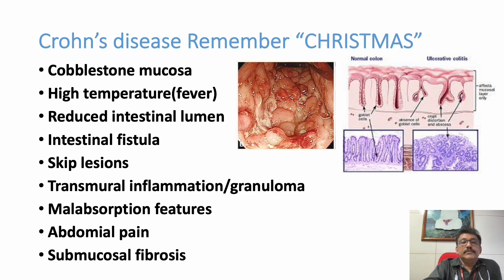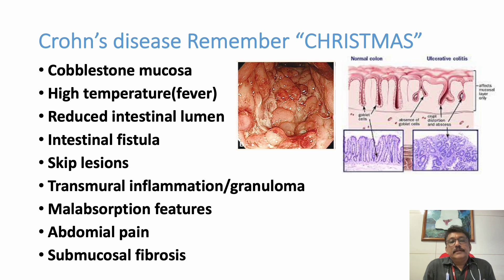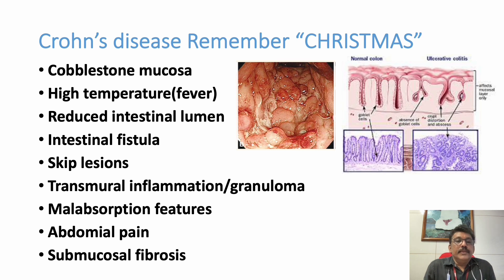In Crohn's disease, we can remember the features using the mnemonic CHRISTMAS: Cobblestone mucosa — you can see the mucosa here is like cobblestone in the endoscopic view. High temperature — fever can be there in most patients. Reduced intestinal lumen — you can see the lumen is reduced because of the thickened mucosa. Intestinal fistulas can be seen in Crohn's disease.